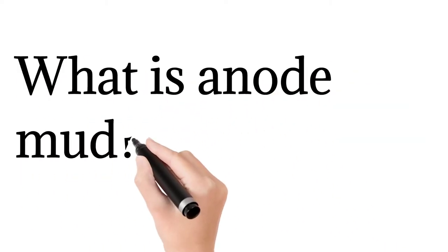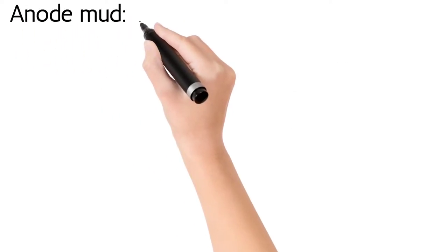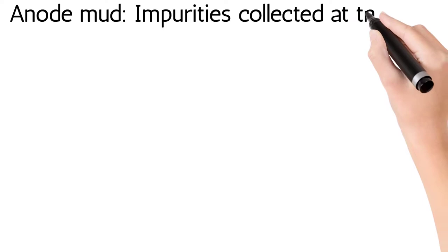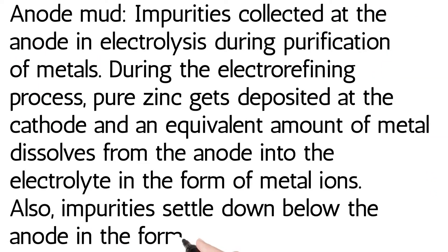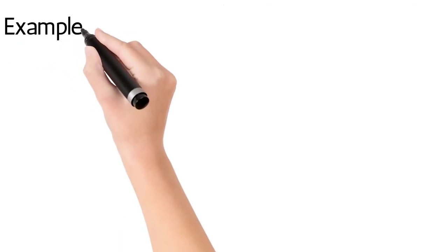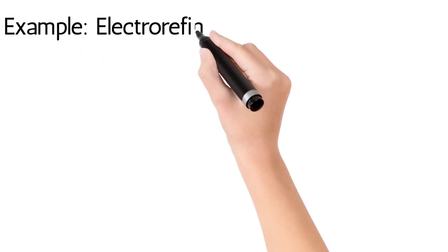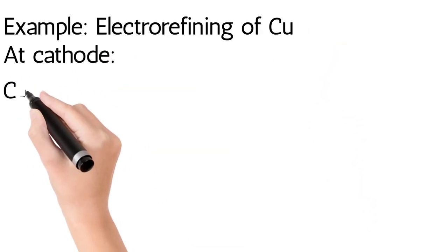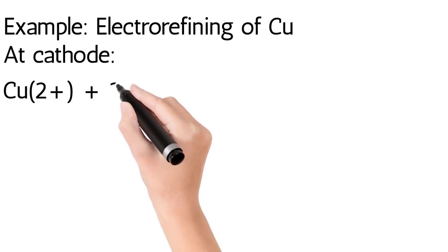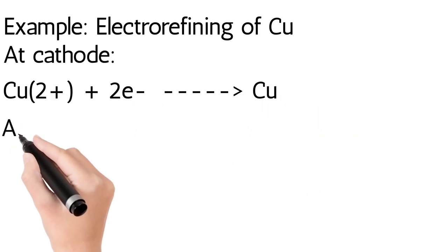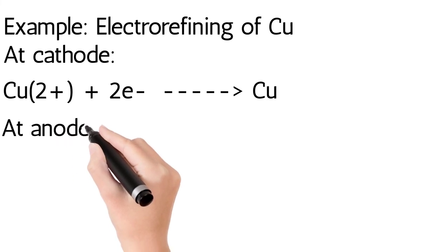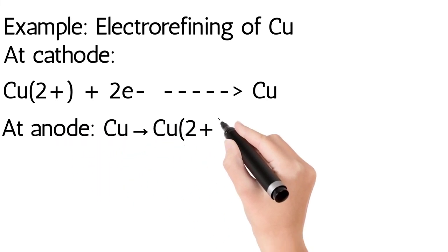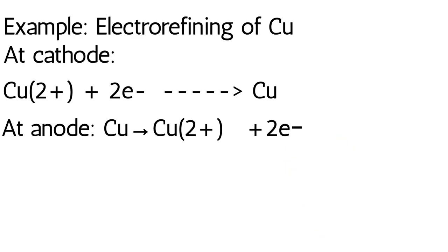In this video we are going to talk about anode mud. Anode mud is basically impurities collected at the anode. Electro refining of copper is also an example of anode mud. At the cathode there will be a gain of two electrons to form copper from copper ions, and at the anode there will be a loss of two electrons.